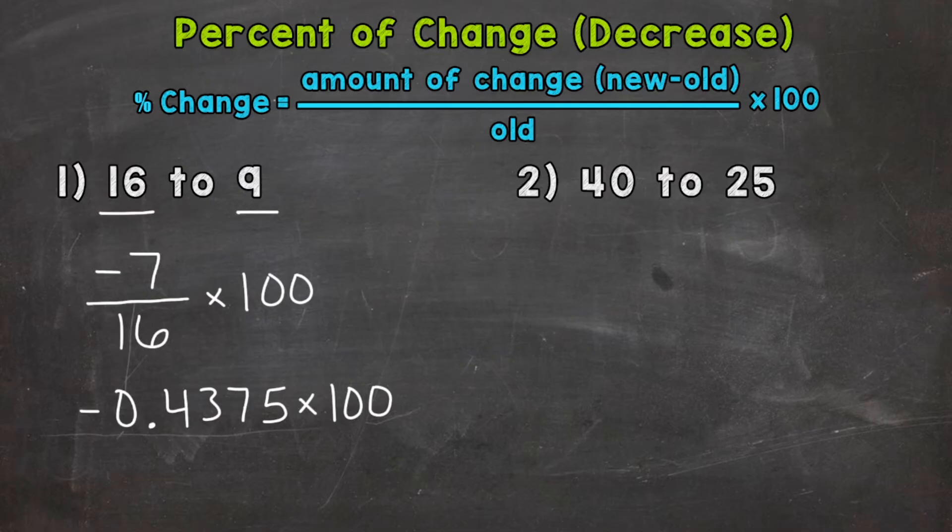Before I do that, I do want to mention that you have to make sure to always divide by the old or original number, because that's the number that changed. So we want the percentage change relative to the number we started with. We're looking at the percent that that number changed. All right, let's multiply by 100.